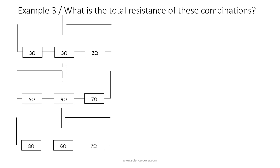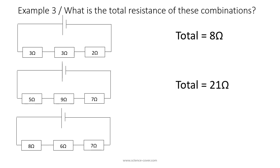In the first diagram I have a 3 ohm, a 3 ohm, and a 2 ohm resistor. Adding 3 + 3 + 2 gives a total of 8 ohms. In the second diagram I have a 5 ohm, a 9 ohm, and a 7 ohm resistor in series. 5 + 9 + 7 = 21, so the total resistance is 21 ohms. In the third diagram I have 8 ohms, 6 ohms, and 7 ohms in series, so the total resistance is also 21 ohms.